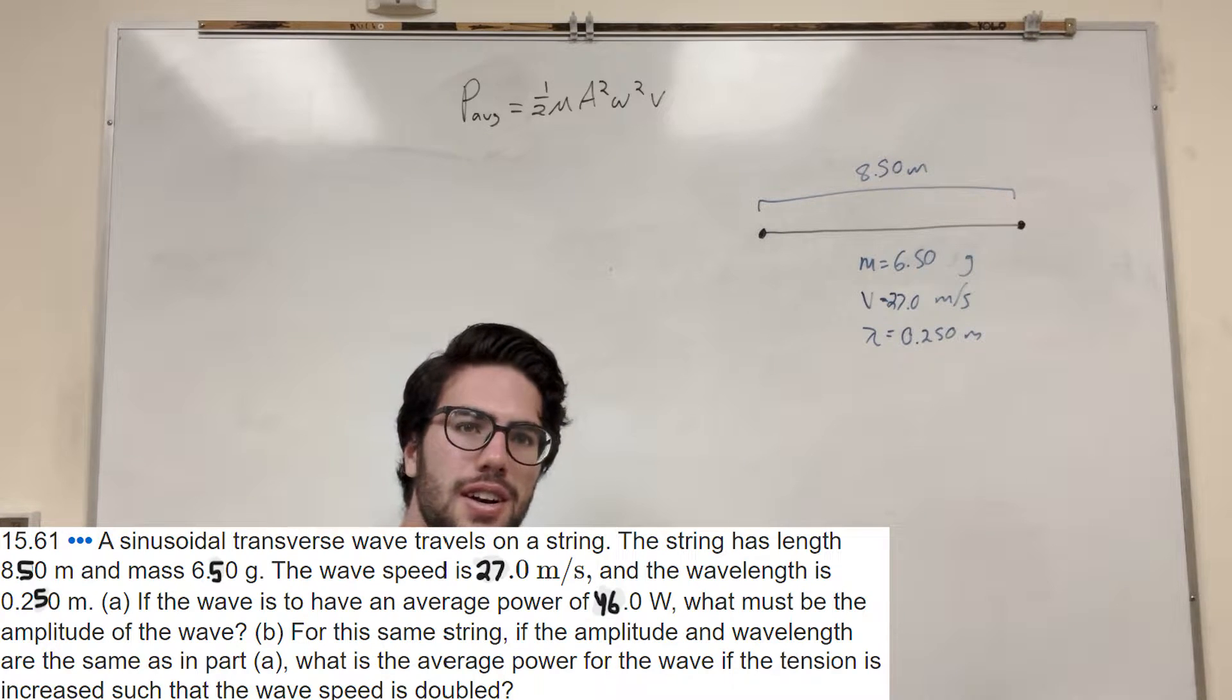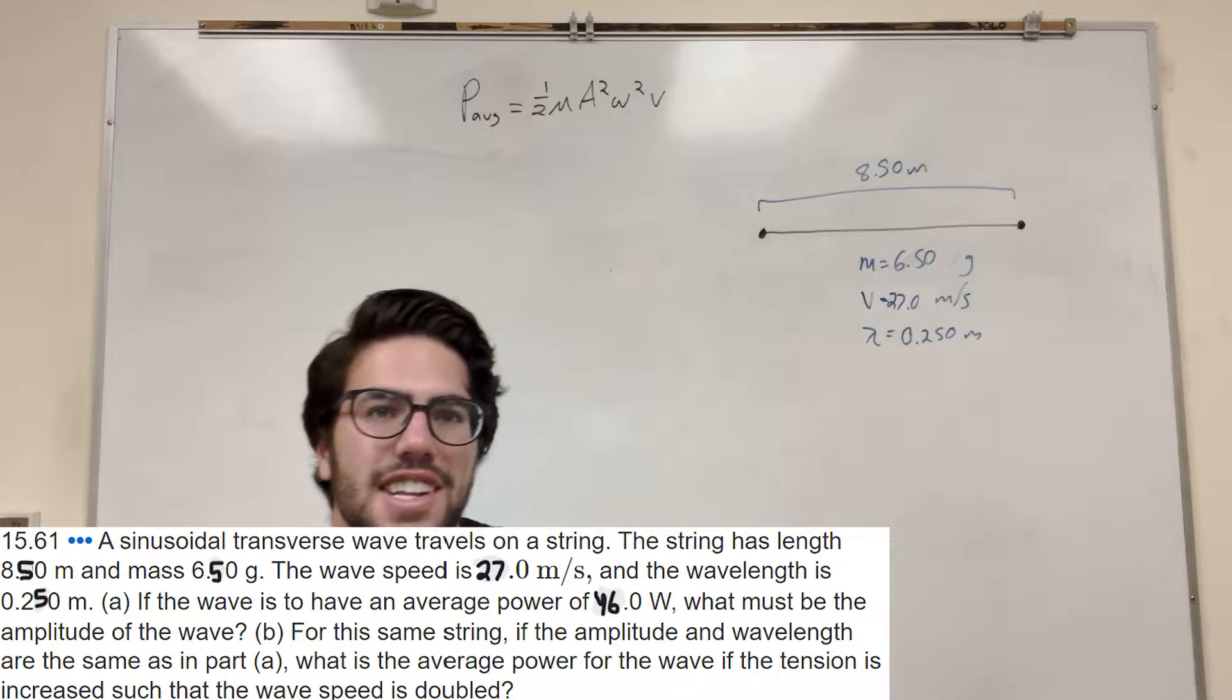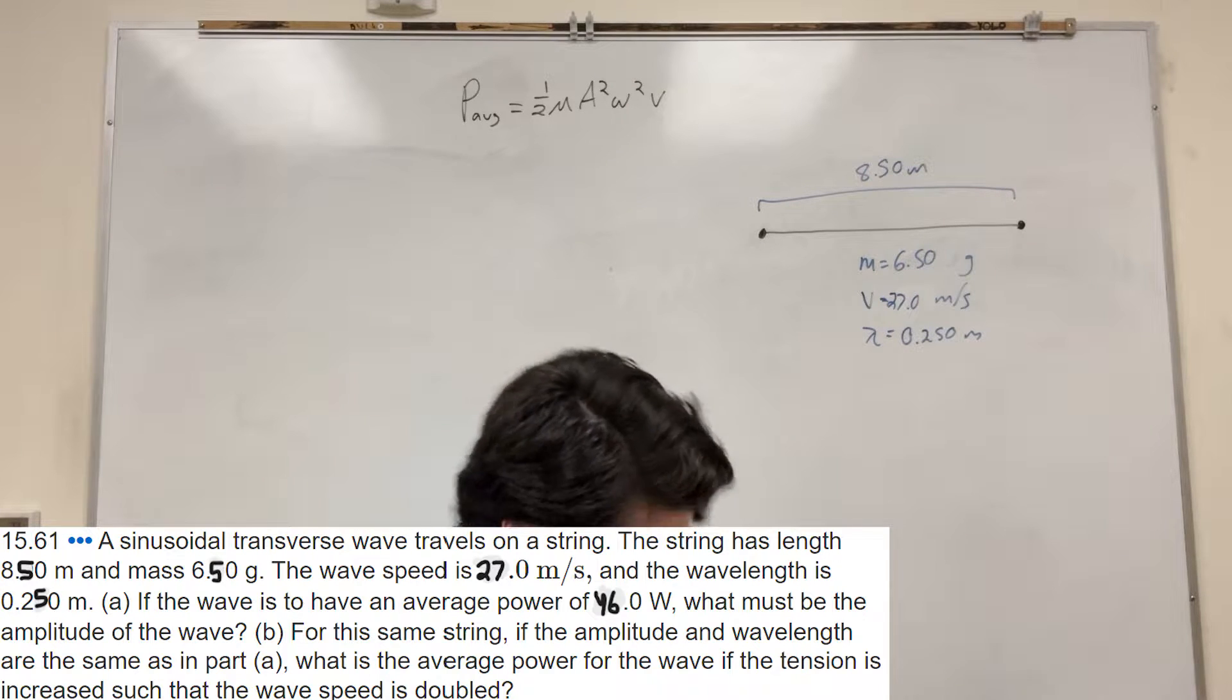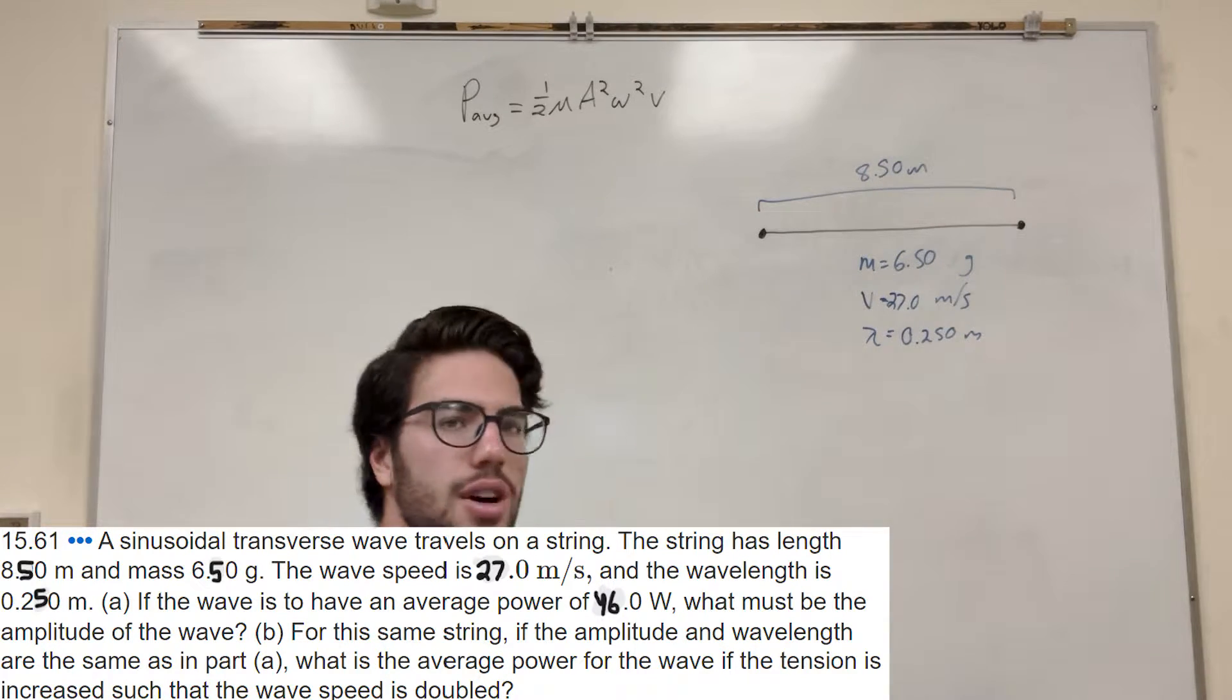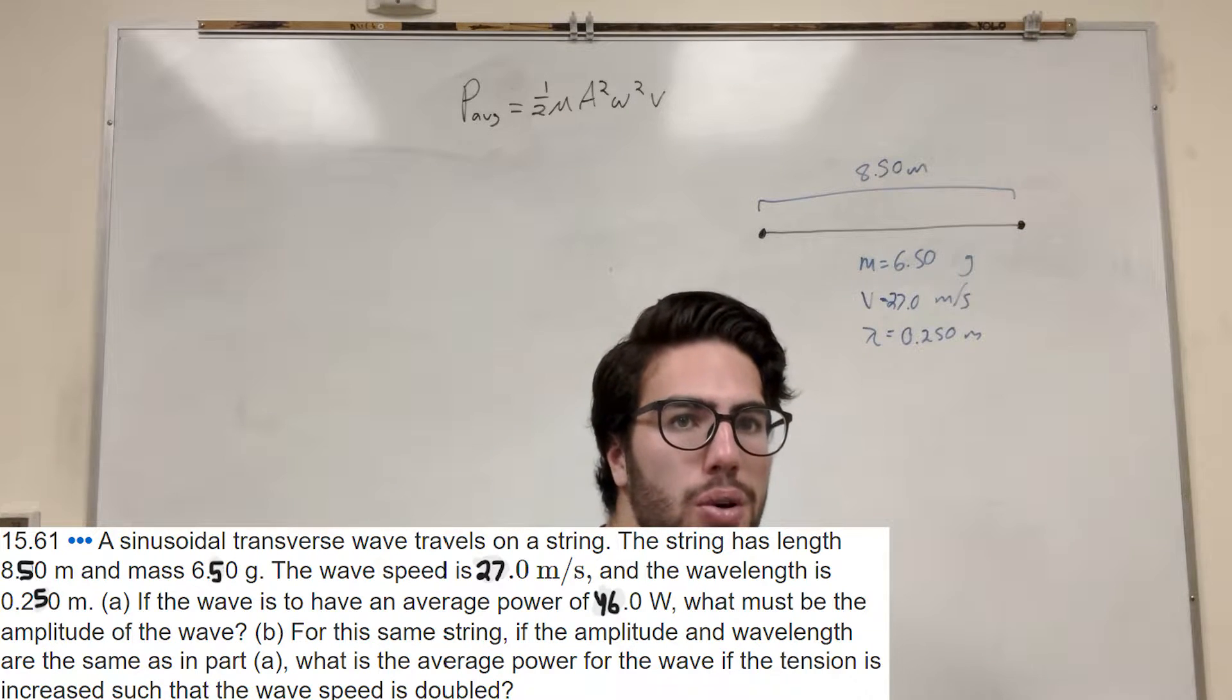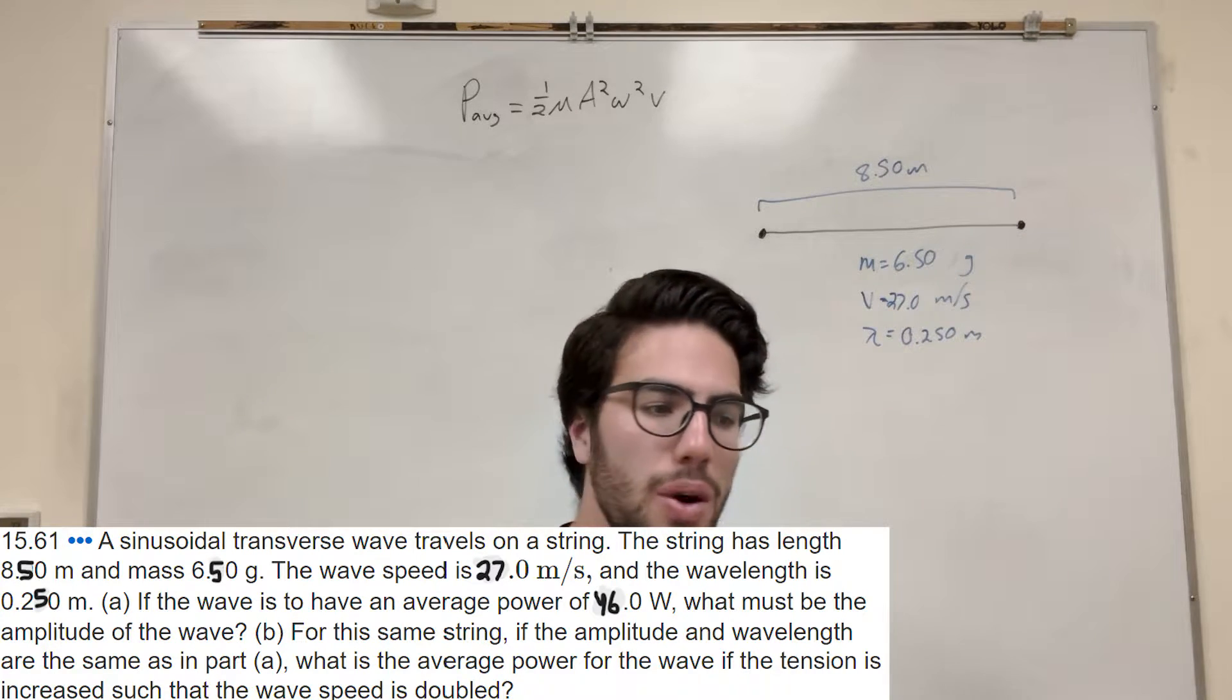What's up, Kyle gang? All right, so we got this problem here. We got this sinusoidal transverse wave that's on a string, and we have these constants, the stuff we know about it. And then it says, if the average power is 46 watts, what must the amplitude of the wave be?